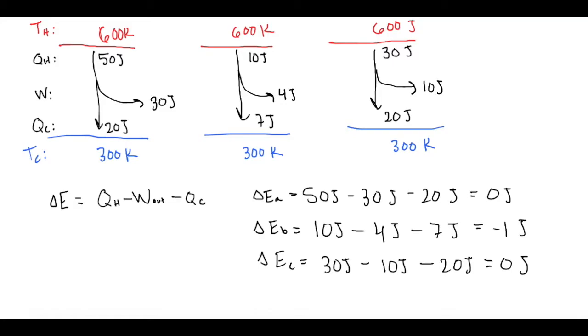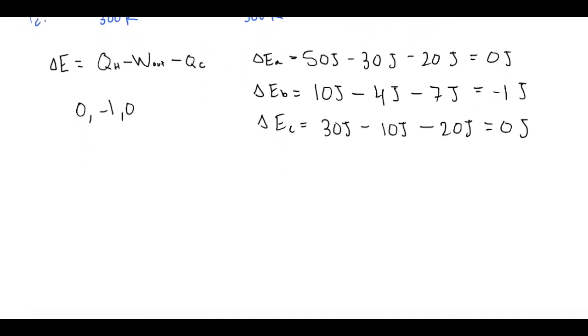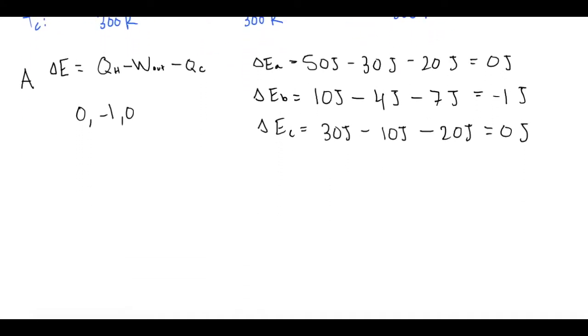So when you put that in, you will put 0, negative 1, comma 0. All right, and that is part A.